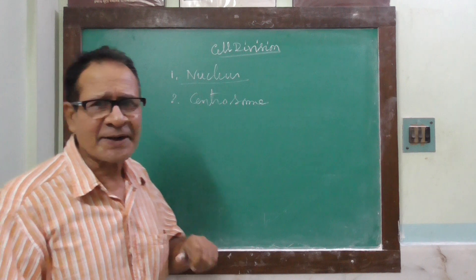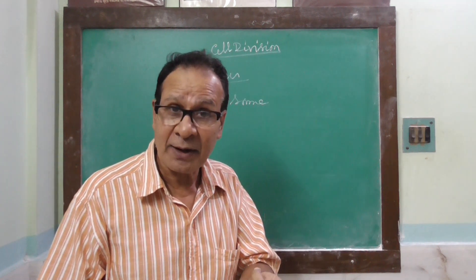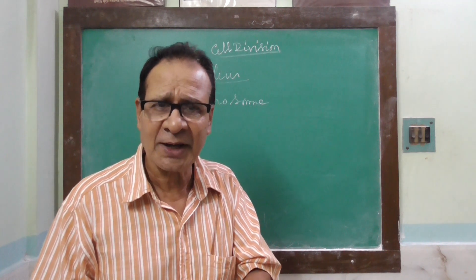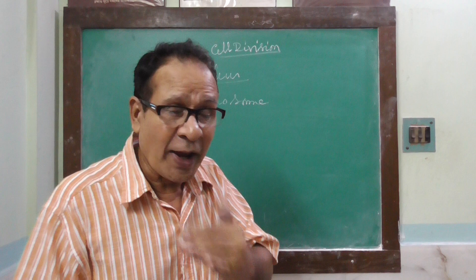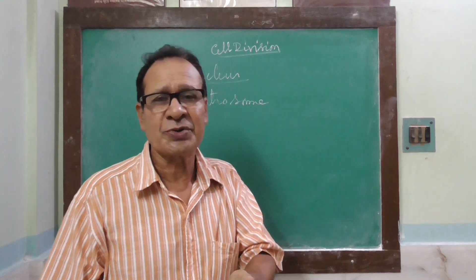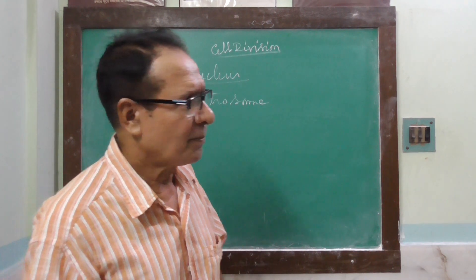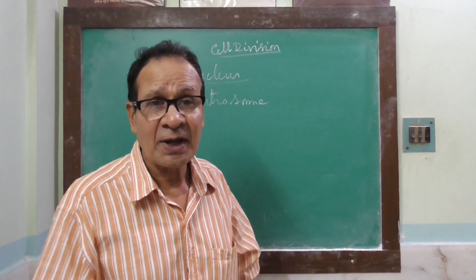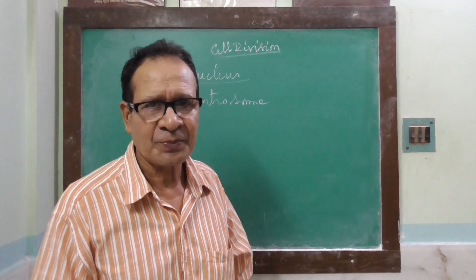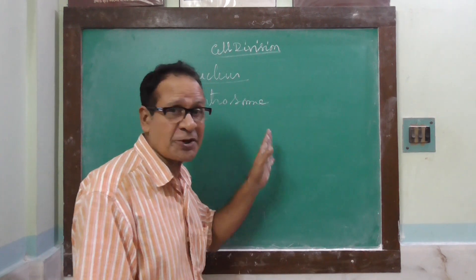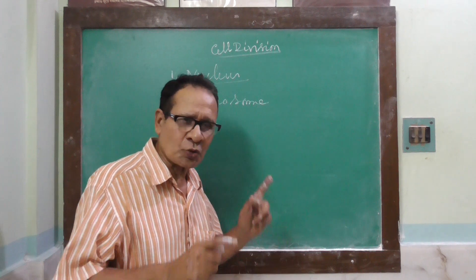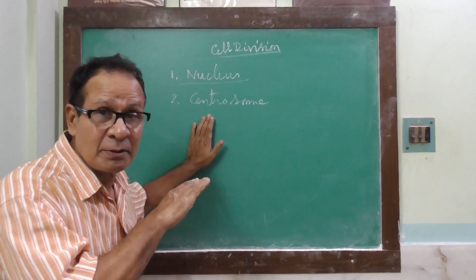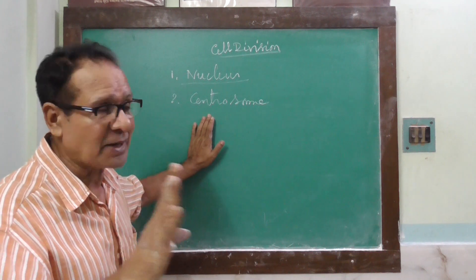Centrosome acts as the microtubular organizing center, where microtubules are formed. Microtubules are fine tubular structures made of tubulin proteins, which take part in the formation of spindle fibers. They also play a major role in cell division in the animal cell.